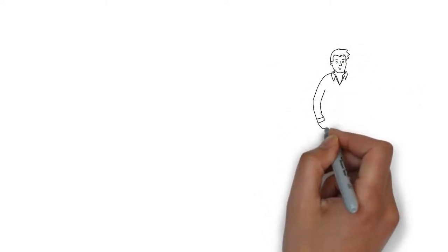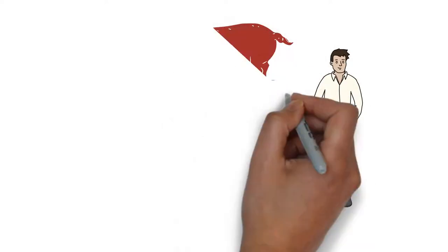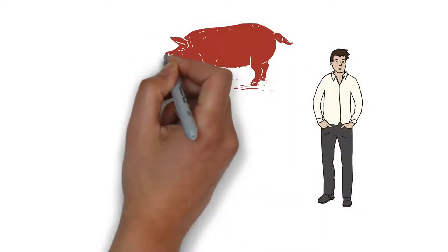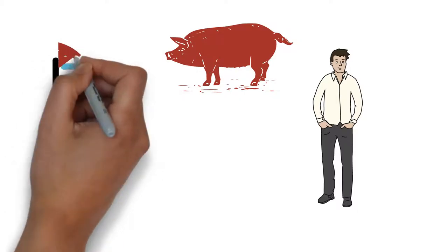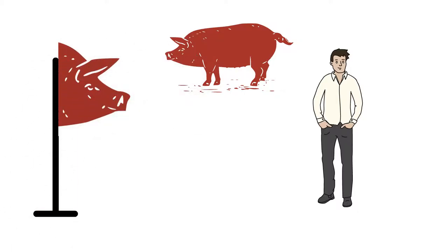Jack declares himself the leader of a new tribe, and as they go hunting, they hunt down a sow which they violently slaughter to mark the occasion. They decapitate the sow and put the head on a stake in the jungle as an offering to the beast.